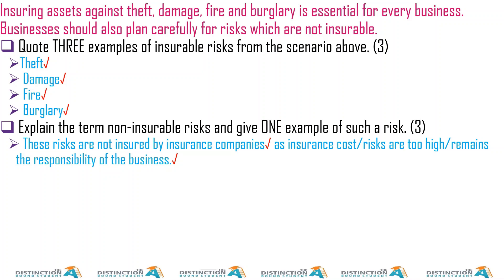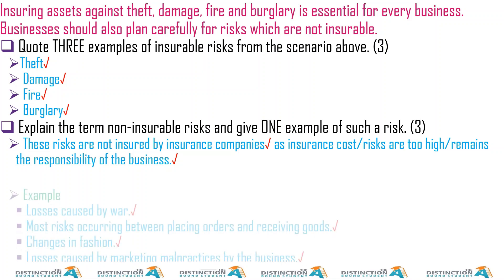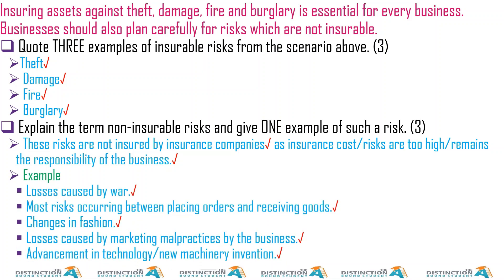Explain the term non-insurable risk and give one example of such risk. These risks are not insured by insurance companies as the insurance costs or risk are too high. The insurance companies are sort of running away from this — if there's going to be a war, it's going to be difficult.